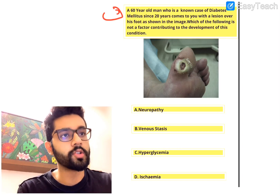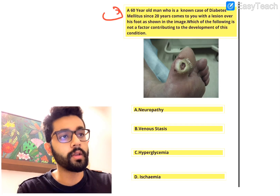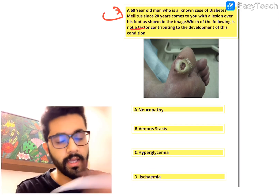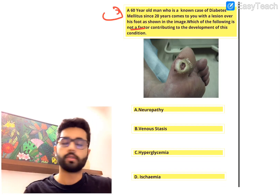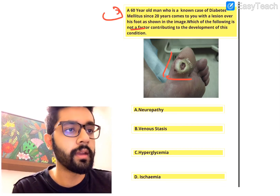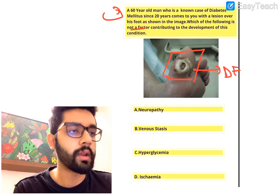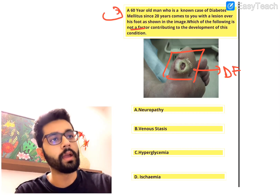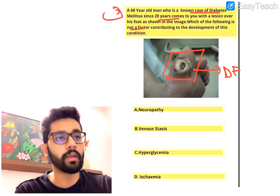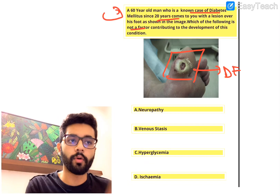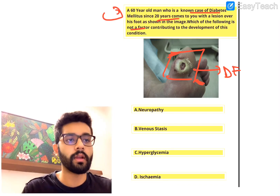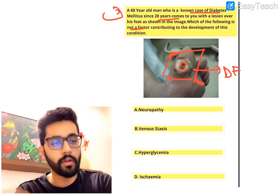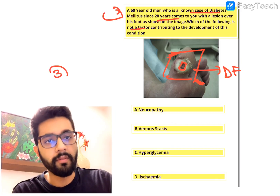Last question: a 60-year-old man, known diabetic for 20 years, presents with a lesion over the foot. Which of the following is NOT a contributing factor? A) neuropathy, B) venous stasis, C) hyperglycemia, D) ischemia. This is a diabetic foot ulcer - it develops over the great toe and near metatarsals, has punched-out edges, and looks like a trophic ulcer. Diabetic foot ulcer is a type of trophic ulcer.